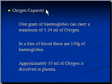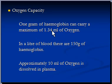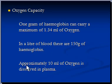How do you calculate the oxygen capacity? One gram of hemoglobin can carry a maximum of 1.34 milliliters of oxygen — that is the maximum capacity of 1 gram of hemoglobin to carry oxygen. In a liter of blood, there are 150 grams of hemoglobin, and approximately 10 milliliters of oxygen is dissolved in plasma per liter of blood.